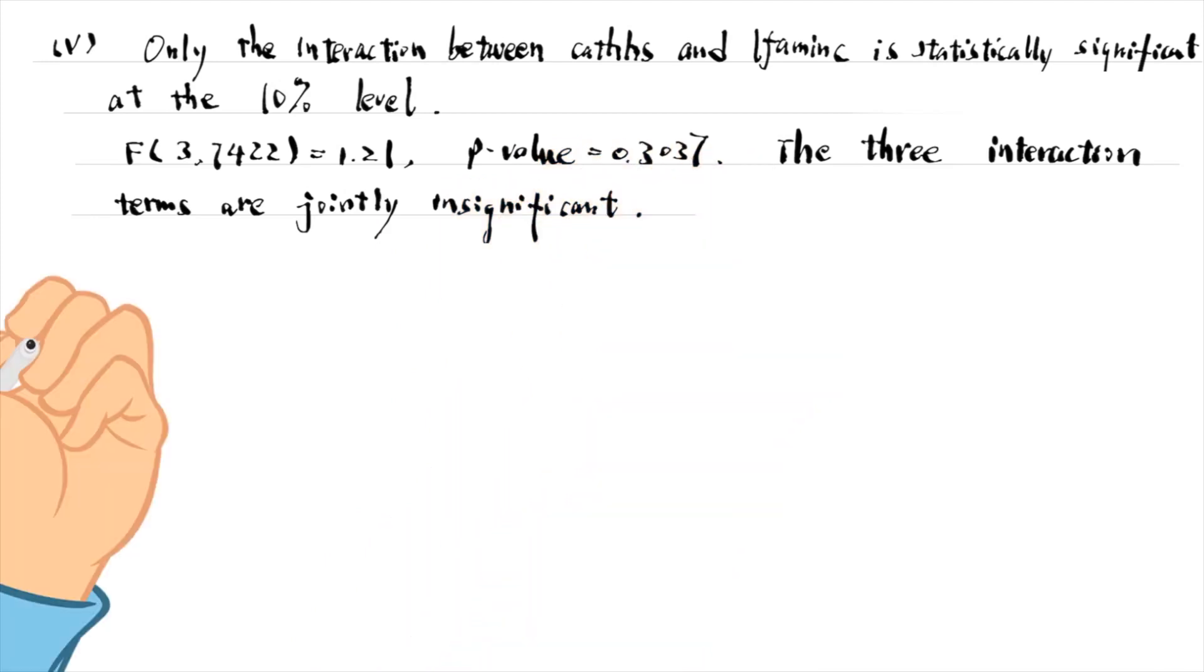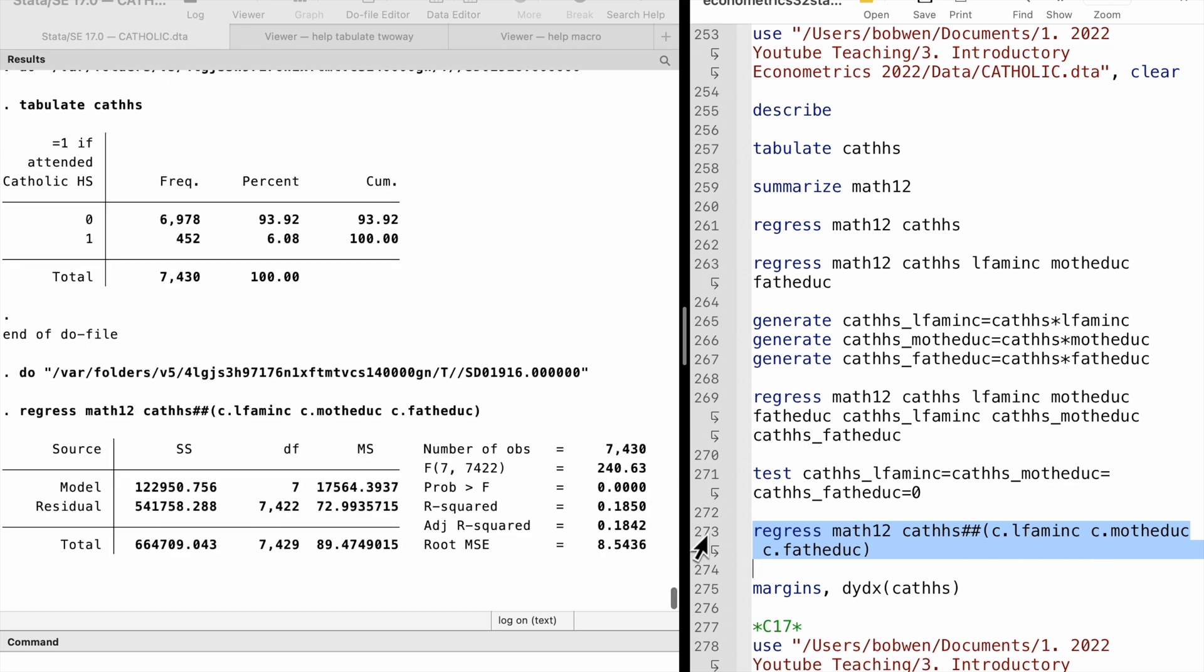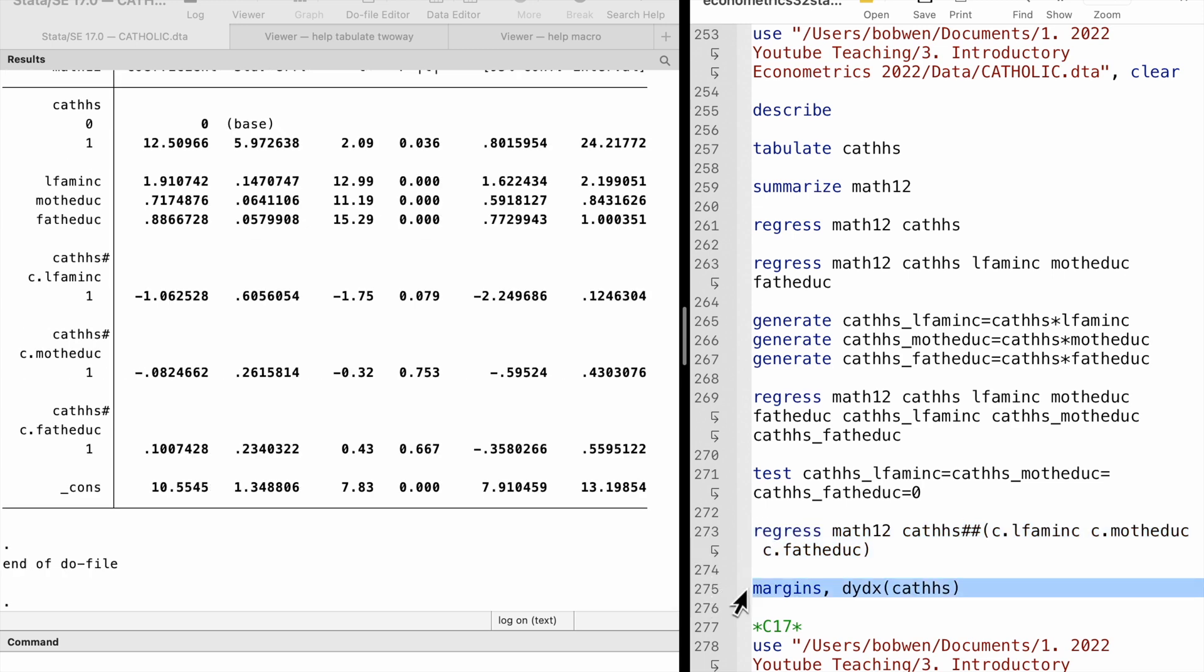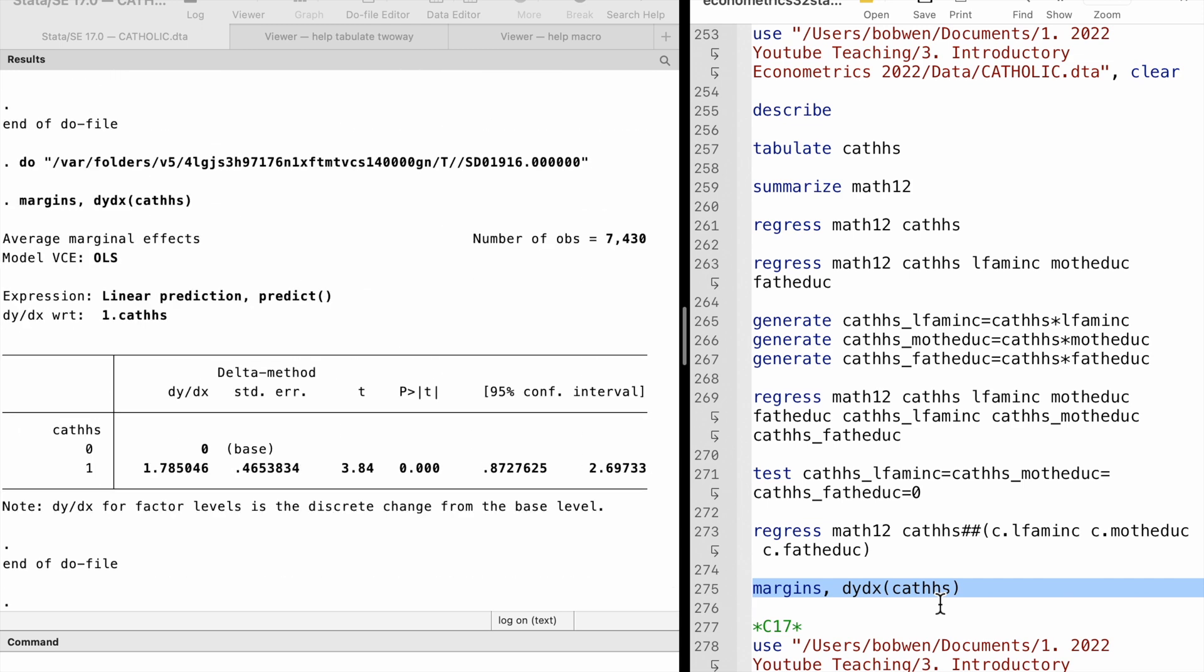For part 6, the coefficient on Catholic high school becomes much larger, because that is the estimate when log income and parent education are all zero. It is not practical. For part 7, we use the margins command with the dydx option to obtain the average partial effect of attending Catholic high schools on math scores. We run the regression with three interaction terms using double hashtags in Stata. The three control variables are placed inside the parentheses after the two hashtags. Then we type margins, comma, the option dydx, and the variable Catholic high school inside the parentheses. The average partial effect is close to that in part 3.